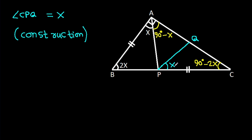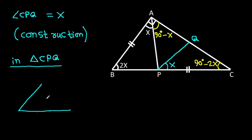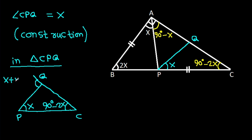After the construction, the relevant angles are: angle x, angle 90 degrees minus 2x, and the corresponding angle works out to 90 degrees minus x.